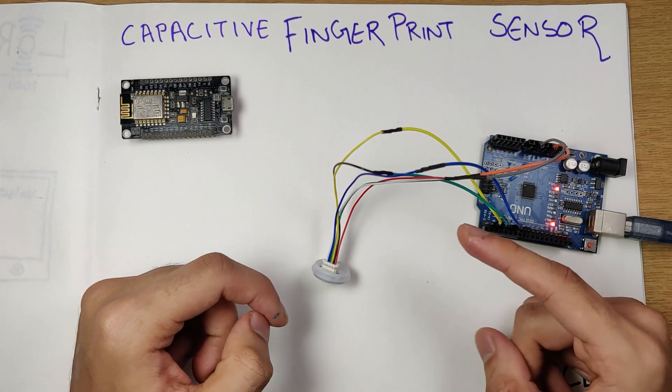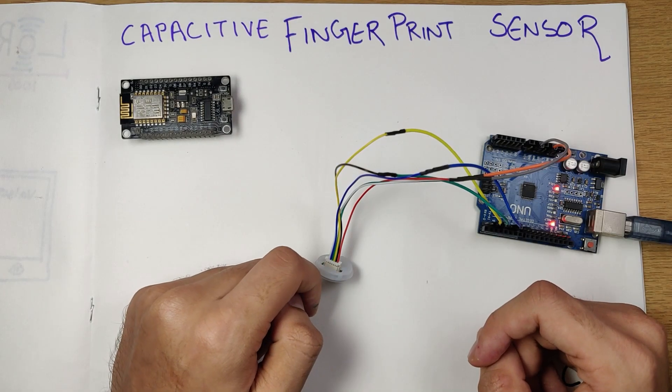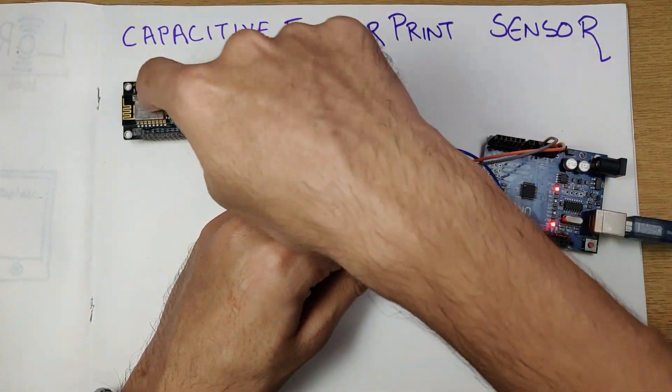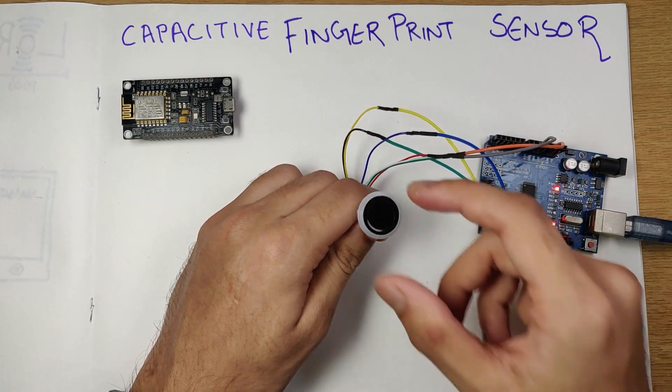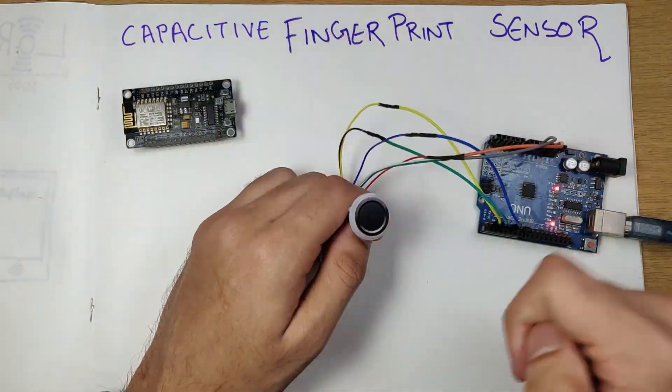Hey yo what is it guys, Akars here back with another video. Today we'll be taking a look at a capacitive fingerprint sensor. We'll be interfacing that fingerprint sensor with an Arduino and an ESP8266, and we'll be making a small project with it so that we can understand how we can interface this with the Arduino or the ESP8266 module.